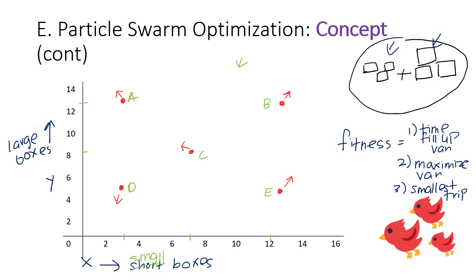All of these candidate solutions will be tested for fitness — time to fill up the van, whether van space is maximized, and whether the number of trips is minimized. Because this all happens at t equals zero, all solutions are each particle's personal best. At the same time, the best solution among all particles will be known by the entire swarm and is designated as the global best.